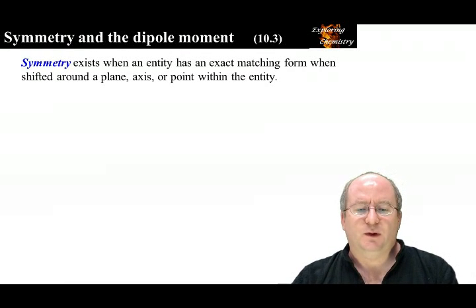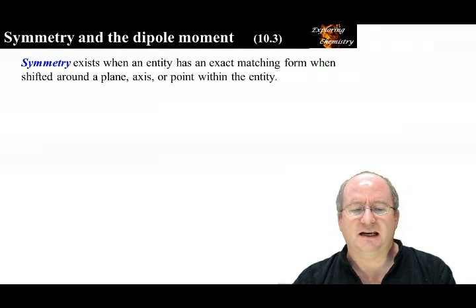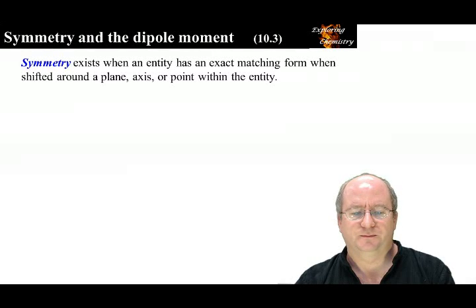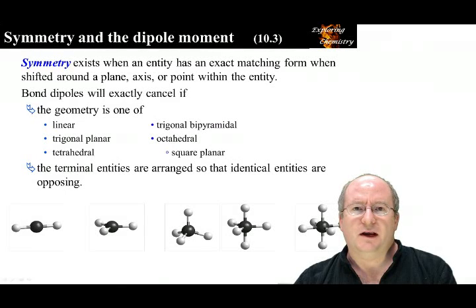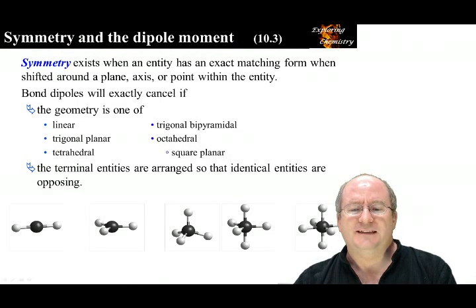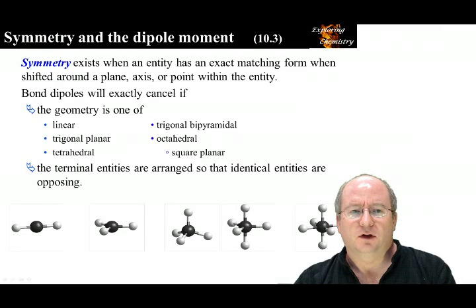Symmetry exists when an entity can be rotated or flipped and the result is identical to the original. If an entity is symmetric, the bond dipoles will cancel. Bond dipoles cancel if the geometry is one of linear, trigonal planar, tetrahedral, trigonal bipyramidal, octahedral, or square planar.